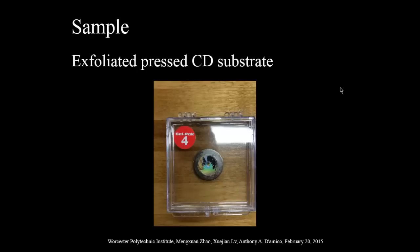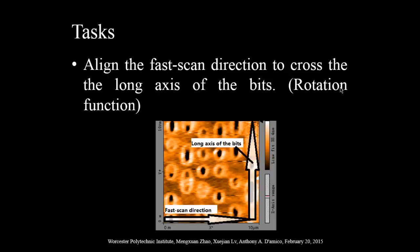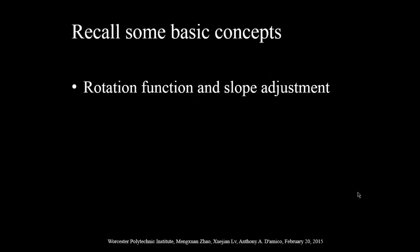This is the sample for Instrument Lab 3. It is an exfoliated pressed CD. The aluminum on the surface is not completely exfoliated. If you scan the image, you will see discrete bits in your image, like this. Align the fast scan direction across the long axis of the bits. To achieve this, you should use the rotation function, which you learned in Instrument Lab 2.